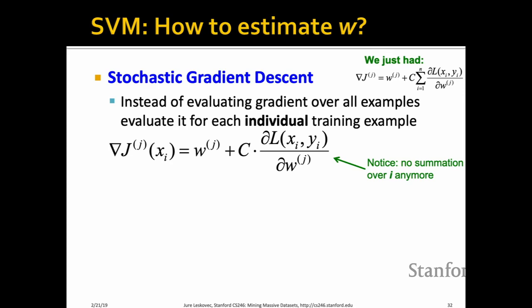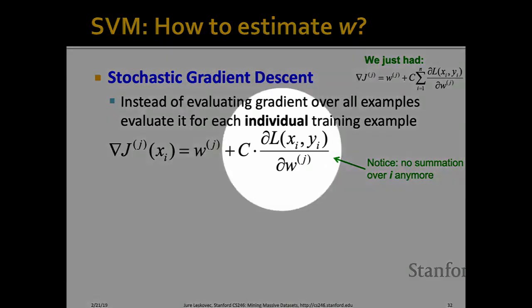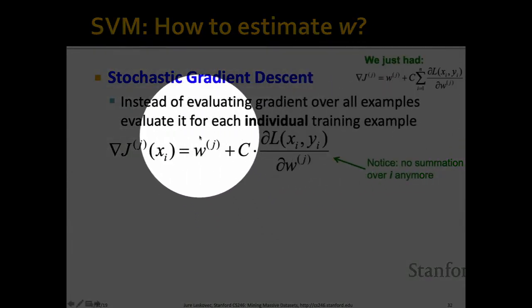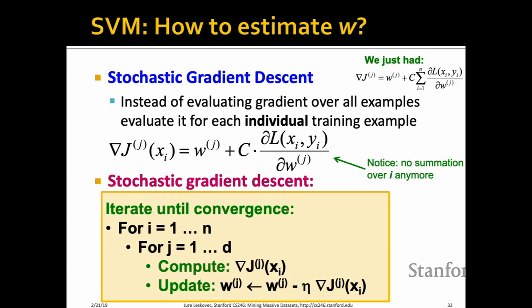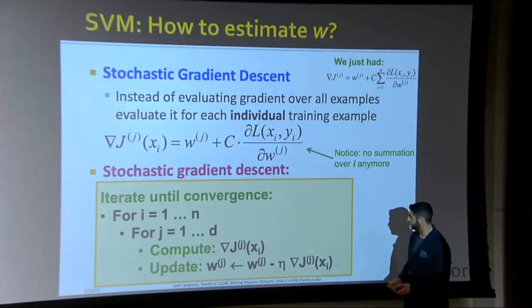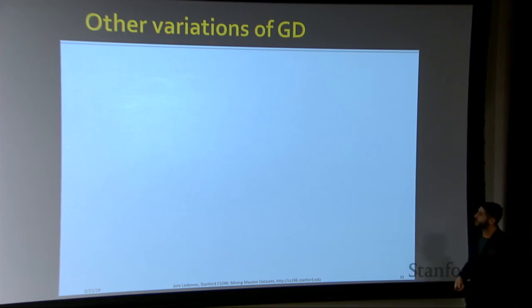The key insight of stochastic gradient descent is that instead of evaluating the gradient over all examples, we evaluate it for each individual training example — just one at a time. The only change from before is that the summation over i is gone; we're optimizing exactly the same function. The pseudocode is pretty much the same, but what was before in the inner loop has come out to the outer loop. We iterate over dimensions, and for each single training instance we do one gradient computation and one update step. This tends to converge faster and is a bit more stable.